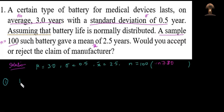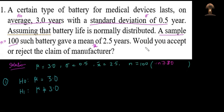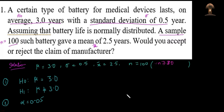Our first step: write the null and alternative hypotheses. The null hypothesis is that the average life is 3 years. For the alternative hypothesis, since it is not specified as less than or greater than 3 years, we simply choose that the mean life of the batteries is not equal to 3 years. This gives us a two-tailed test. The second step: significance level alpha. Since it is not specified anywhere, we choose alpha equals 0.05, which is the standard value to choose when not specified.